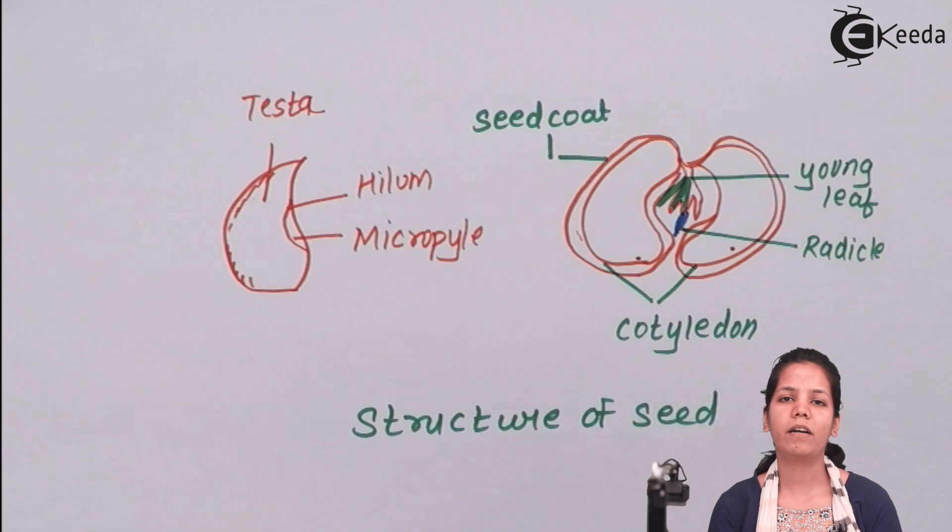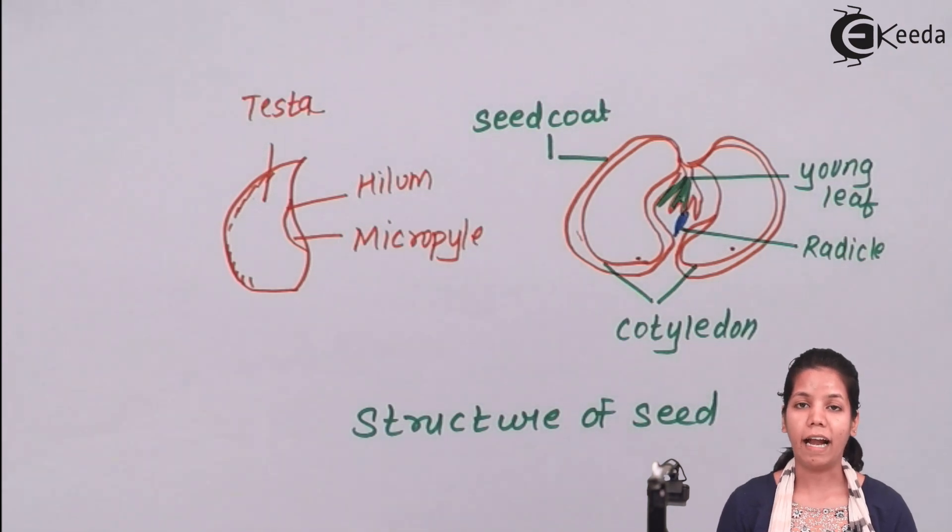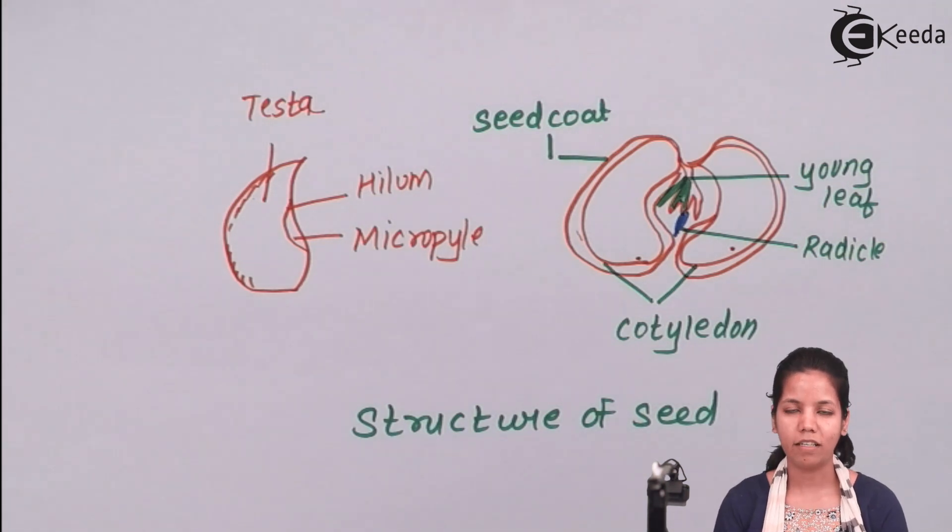Students, in this part of the chapter we have studied about the structure of a seed. How different parts of the seed - the seed coat, embryo, cotyledons, radicle, plumule - help a seed to grow in a better manner and develop a small plant. I hope you are clear about this concept of seed. Thank you.